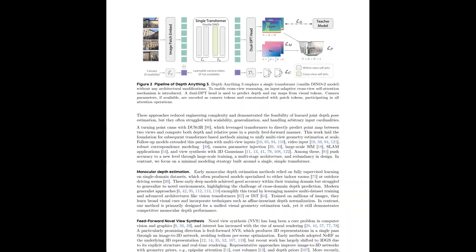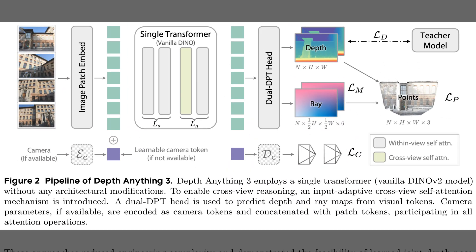Figure 2 shows the whole pipeline that turns any set of images into aligned depth and ray maps, which means each pixel gets a 3D line it lives on, so views agree geometrically. The left panels supply images that become patch tokens. The central block runs a single transformer with cross-view self-attention, a mechanism that lets tokens compare across images to reason about shared structure. The right panels output depth, ray, and fused points, so geometry becomes directly usable.